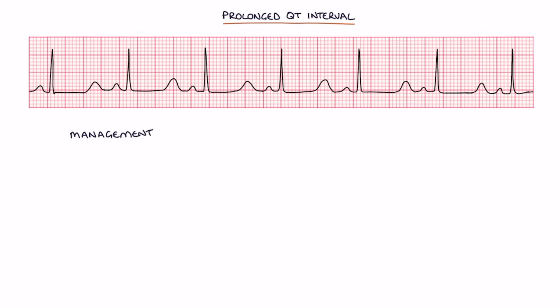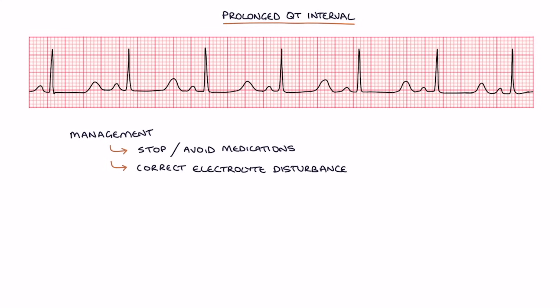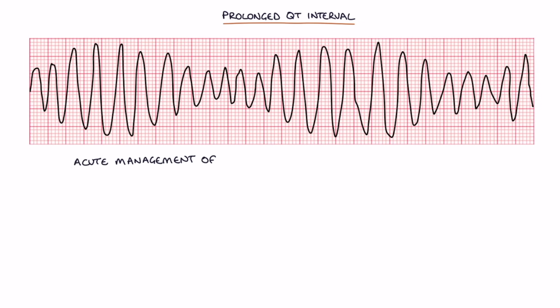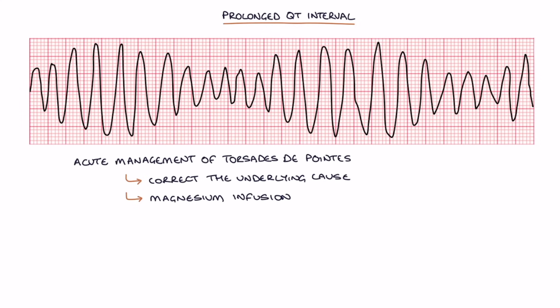Management of a prolonged QT interval involves stopping and avoiding medications that prolong the QT interval, correcting electrolyte disturbances, using beta blockers but not sotalol, and pacemakers or implantable cardioverter defibrillators. Acute management of torsade de pointes involves correcting the underlying cause such as electrolyte disturbances or medications, a magnesium infusion even if the patient has a normal magnesium level, and defibrillation if ventricular tachycardia occurs.